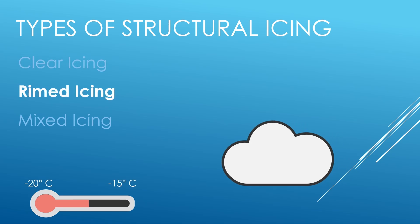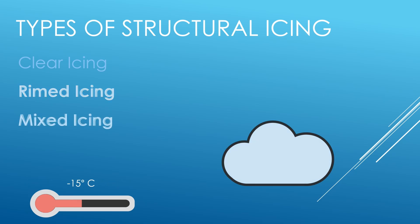Rime icing typically forms at temperatures between -15°C and -20°C. It is commonly encountered in clouds and freezes instantly. Rime ice has a milky, opaque appearance resulting from air being trapped when it strikes the leading edge of an airfoil and freezes. Mixed icing is a combination of clear and rime ice that accumulates on the airfoil, forming in the presence of moisture at temperatures between -10°C and -15°C.